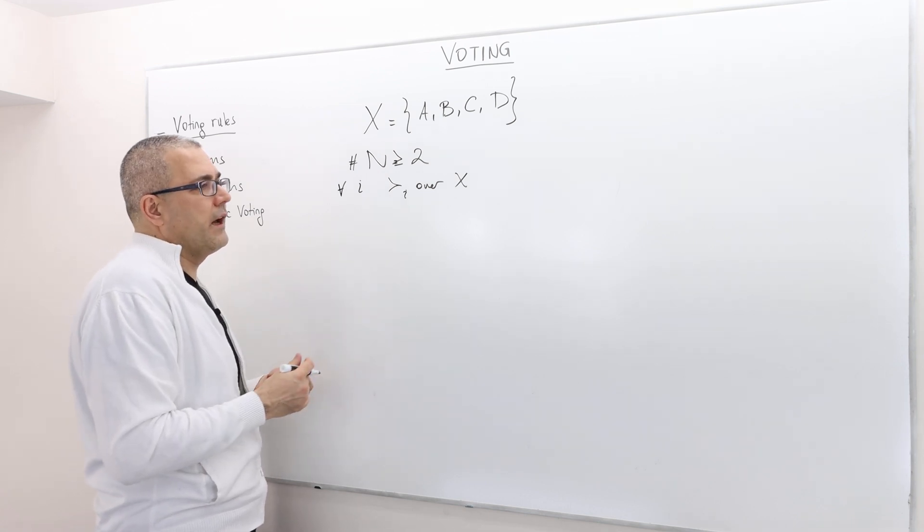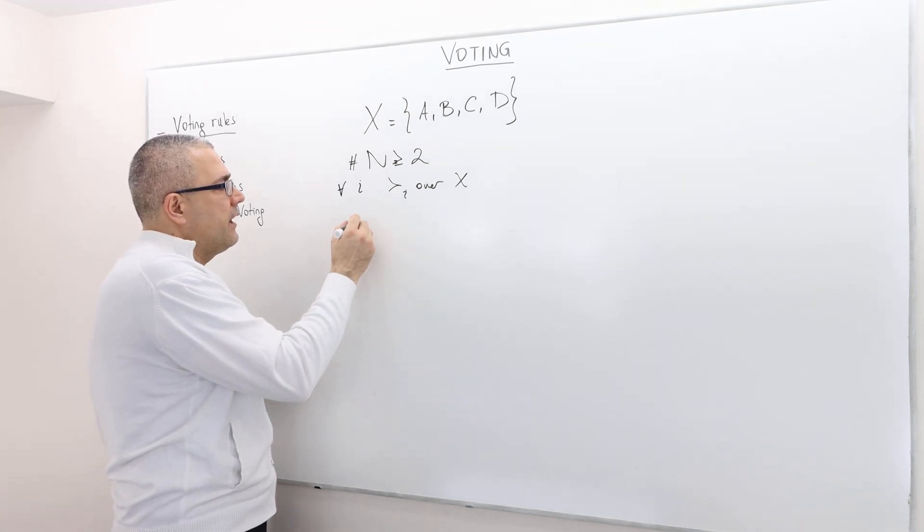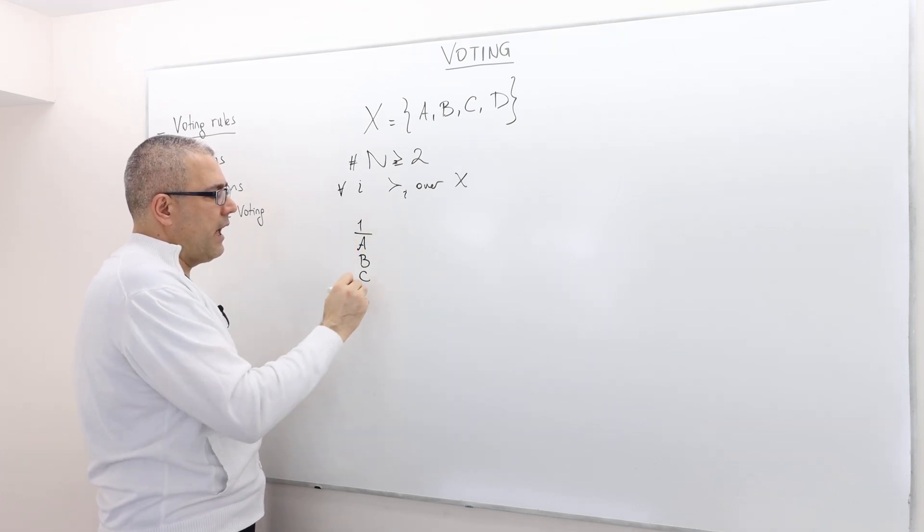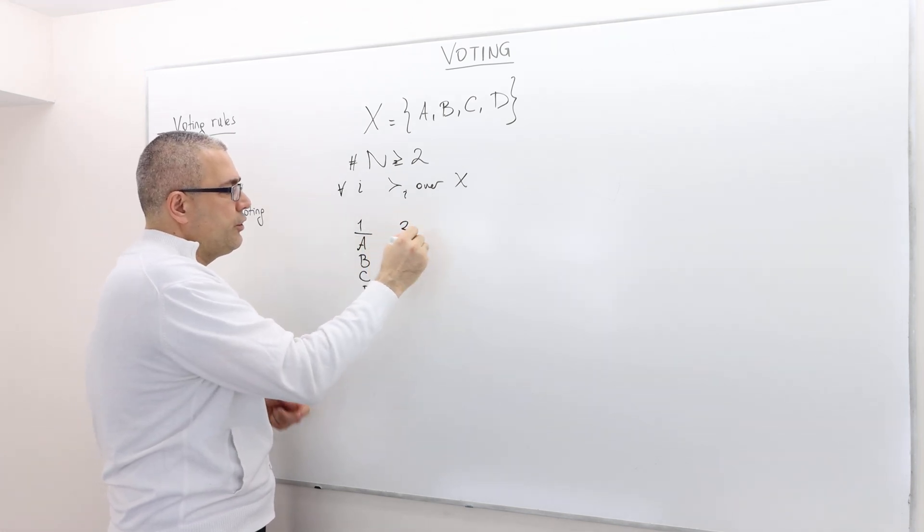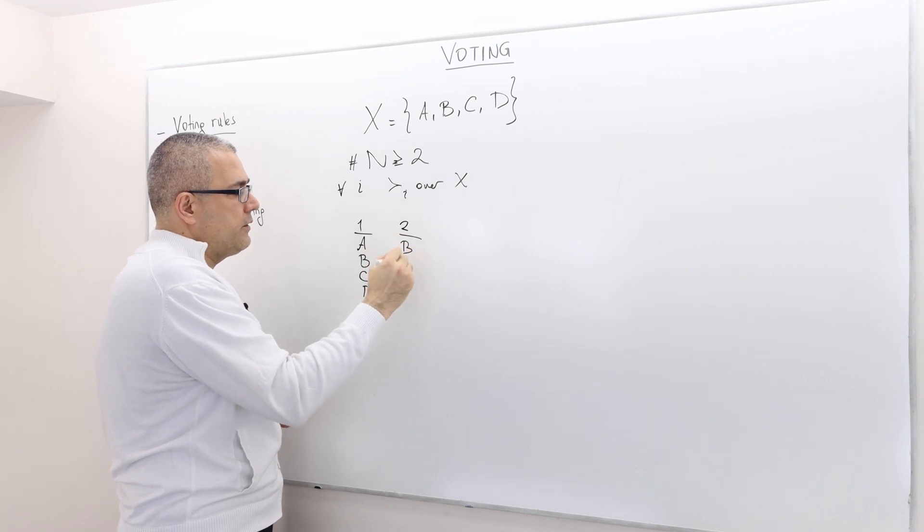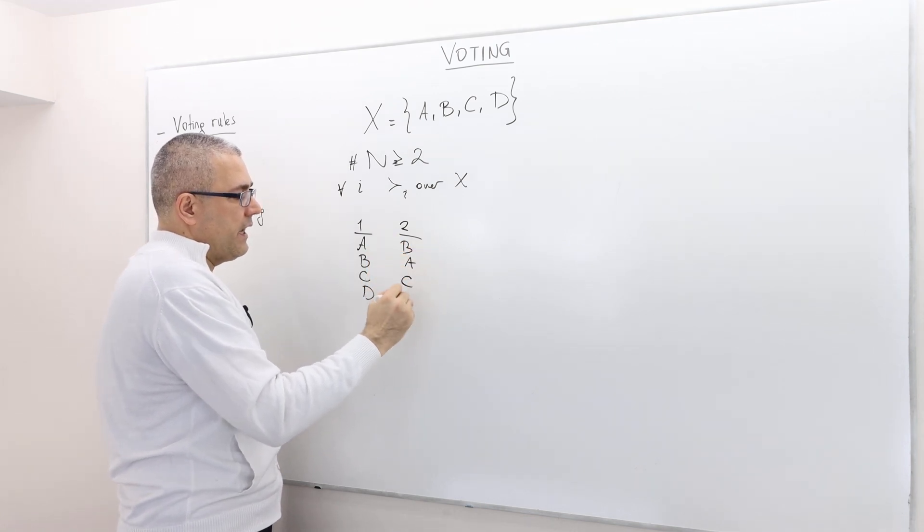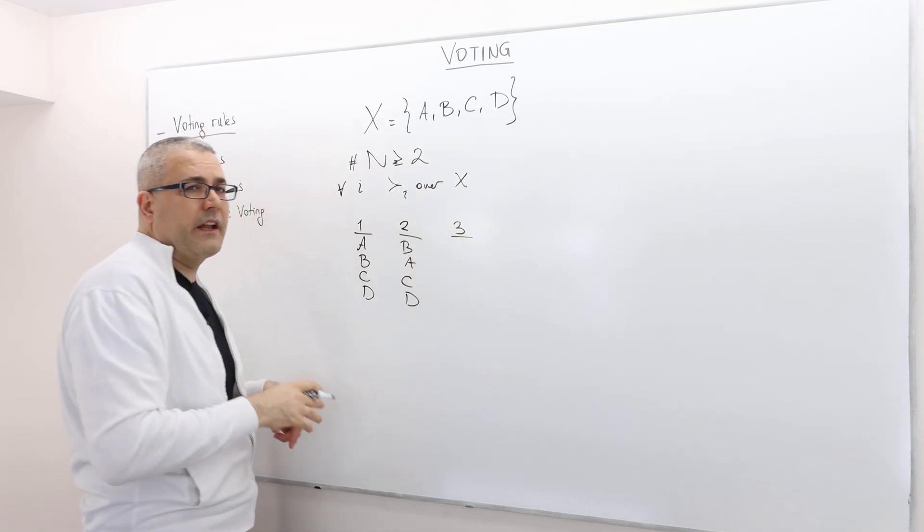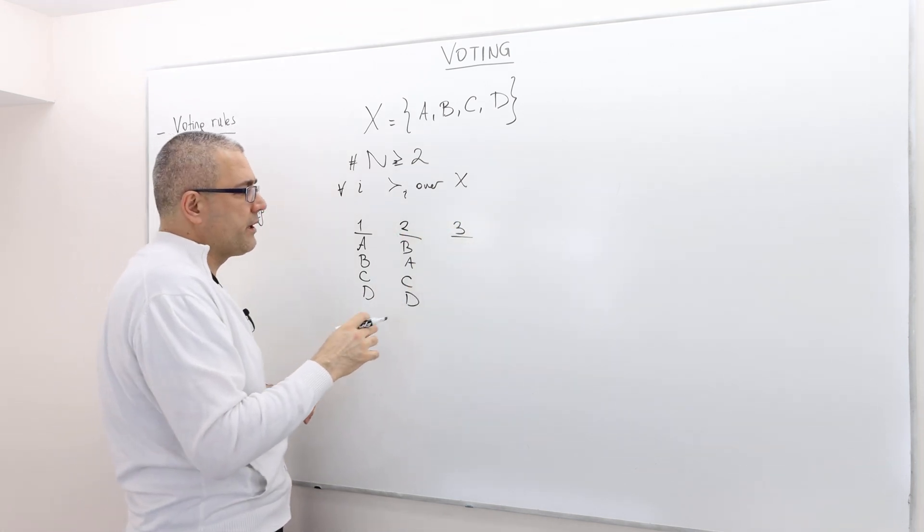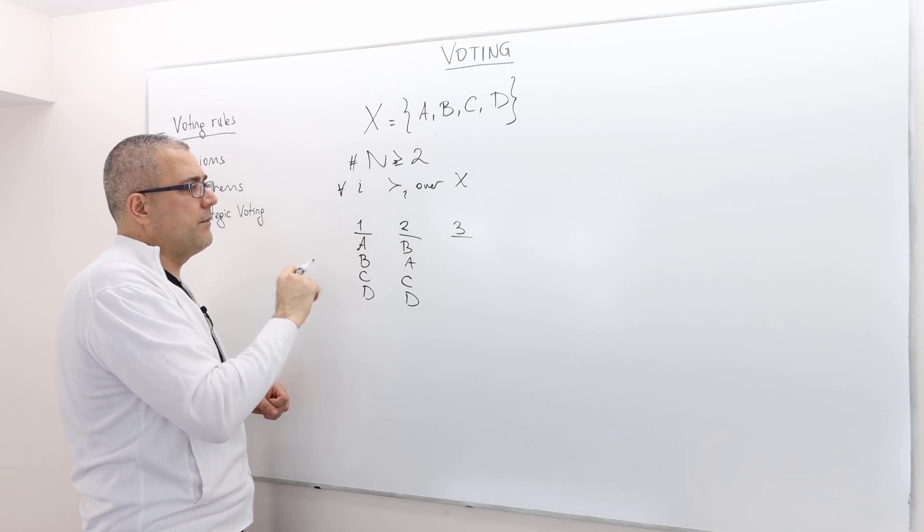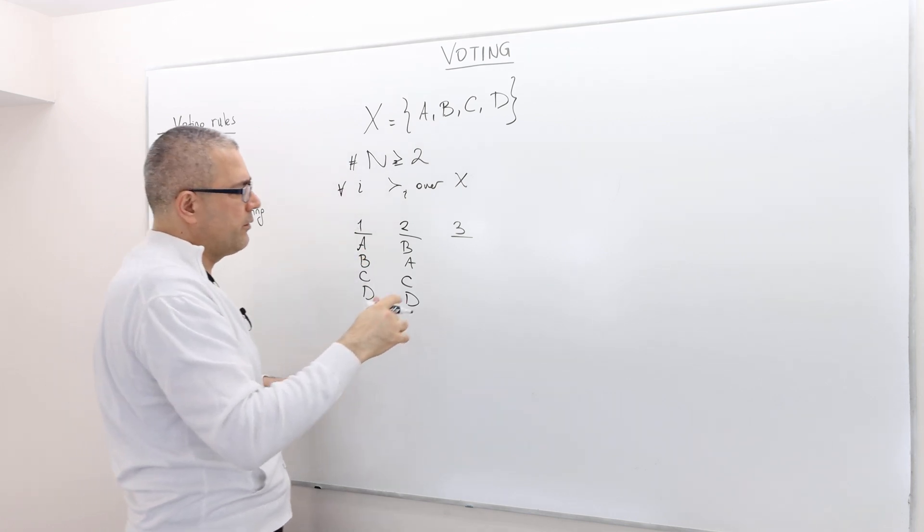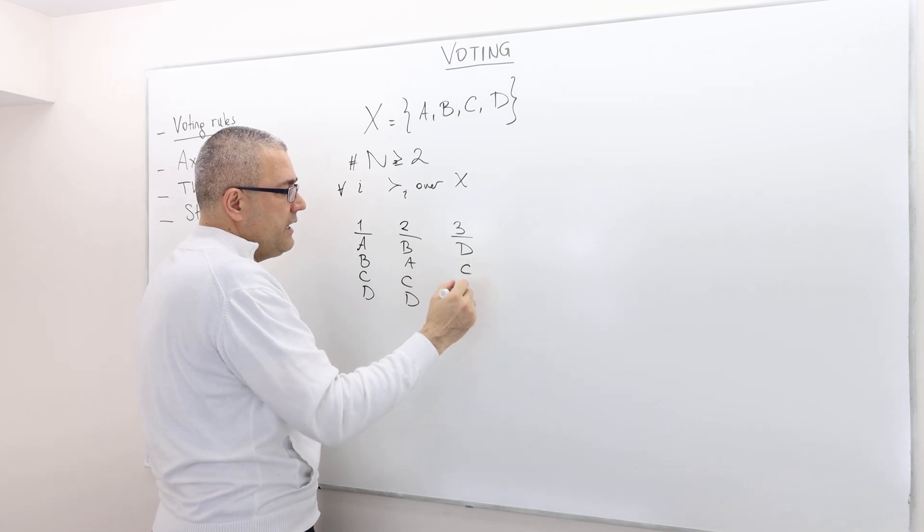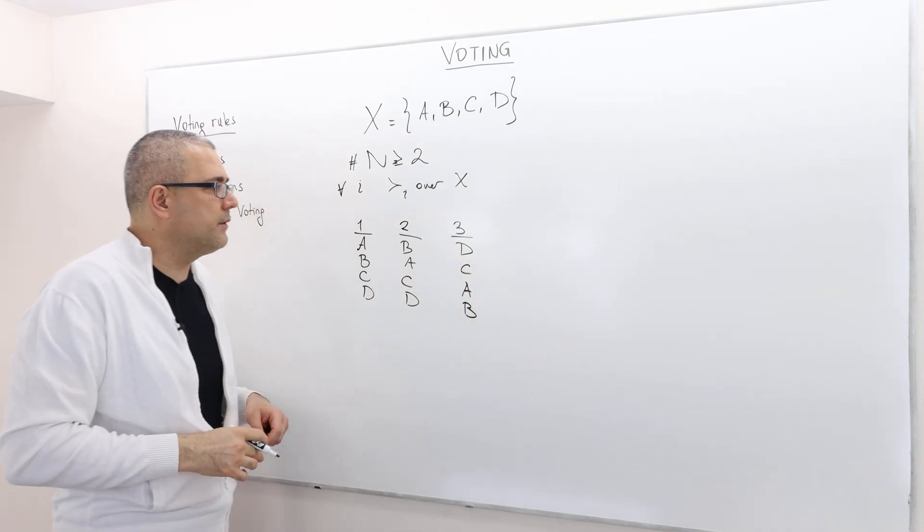One scenario is agent one prefers A to B, B to C, and then C to D. Agent two prefers B to A, then A to C, then C to D. Voter three, let's suppose we have only three voters, she prefers D to C, then C to A, then A to B, for example.